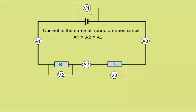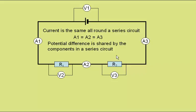Voltmeter 1 here will read the EMF of the supply, the energy coming into the circuit. Voltmeter 2 will read the potential difference across resistor 1, and voltmeter 3 the potential difference across resistor 2. The energy coming in, or the EMF here, must be equal to the sum of the potential differences. That is Kirchhoff's second law, and so that tells us that the potential difference will be shared between the components in a series circuit.